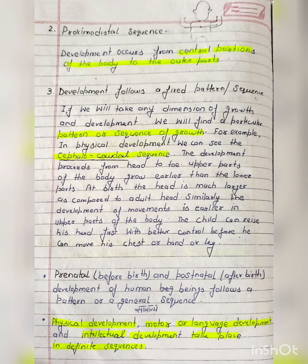The third principle is that development follows a fixed pattern or sequence. If we take any dimension of growth and development, we will find a particular pattern or sequence. In physical development, we can see the cephalocaudal sequence — development proceeds from head to toe. Upper parts of the body grow earlier and then lower parts. At birth, the head is much larger as compared to the adult head.